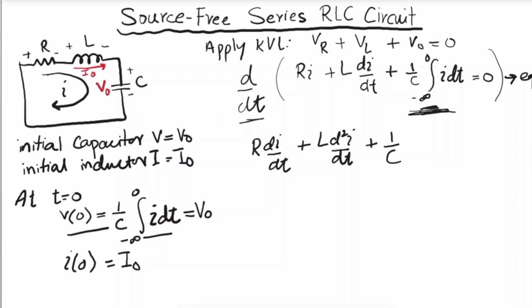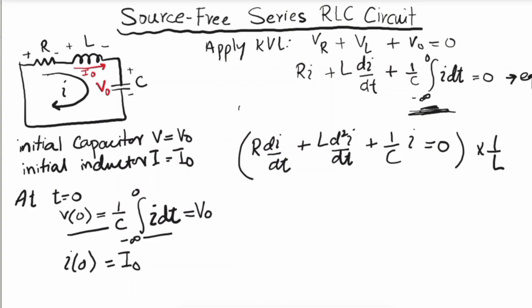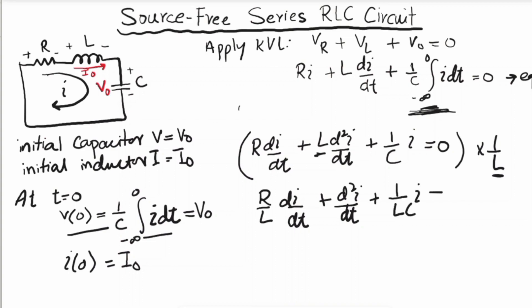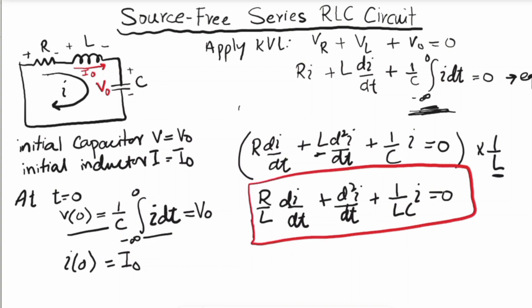Multiplying by one over L to simplify, we get (R/L)·di/dt + d²i/dt² + (1/LC)·i = 0. This equation is called the second-order differential equation, and we call it equation two.